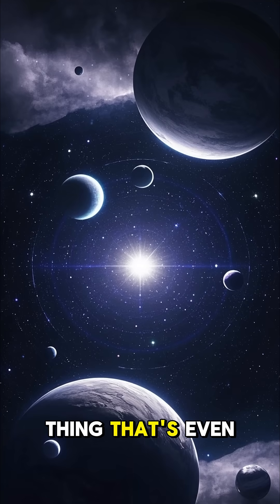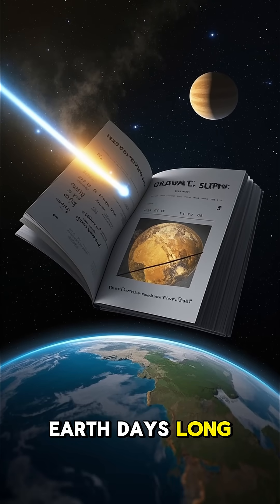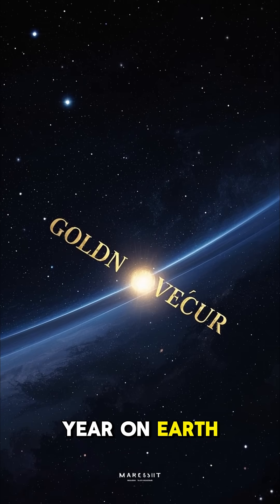But there's one thing that's even weirder than that. A year on Venus is 225 Earth days long. So a day on Venus is longer than a year on Earth.